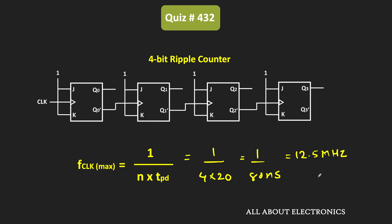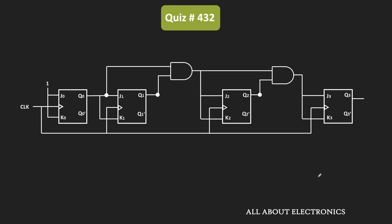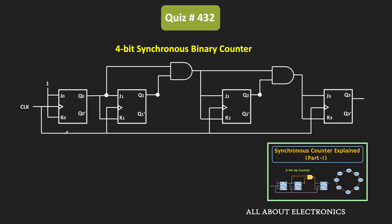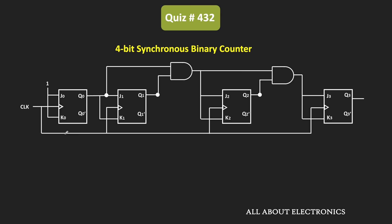Similarly, now let us find the maximum operating frequency for counter B. This counter is basically a synchronous counter, because all the flip-flops receive the clock at the same time. If you closely observe, this is a 4-bit synchronous binary counter. Since all the flip-flops receive the clock at the same time, once they receive the stable input, they will respond to that input immediately.